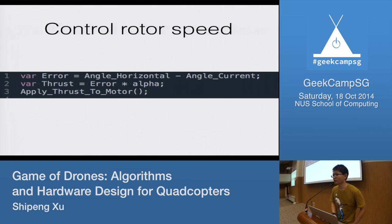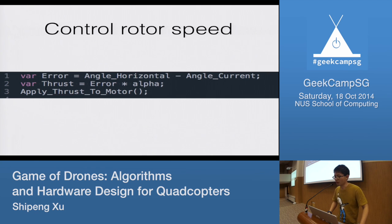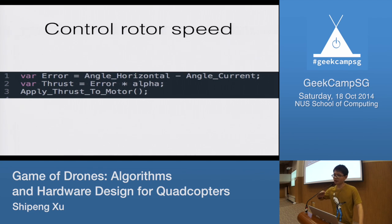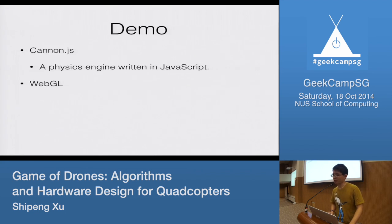Once we know the current attitude, the next step is how do we control the motors — how they react to the difference between the expected angle and the current angle. The easiest way is to calculate the error between the expected value and current value. If the current angle is tilted, we increase the motor speed on one side and decrease the motor speed on the other side. I'll show a demo created with Cannon.js, a physics engine written in JavaScript, with the result shown in WebGL.